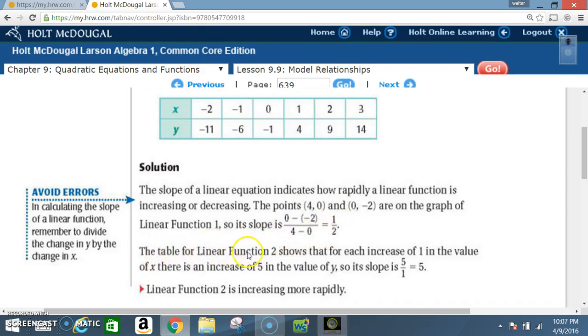Now the table for linear function two shows that for each increase of one in the value of X there's an increase of five in the value of Y. So its slope is five over one which is five. So all they're saying there is we'll pick this part but it's doing it for the whole thing. X is increasing by one and Y is increasing by five. Well another way to say it nine minus five is, nine minus four is five, and two minus one is one. So you put your Y over the X, five over one. Same thing here. 14 minus nine is five. Three minus two is one. So you end up with five over one. So linear function two is increasing more rapidly. So this is going five per one. This is going one per two.